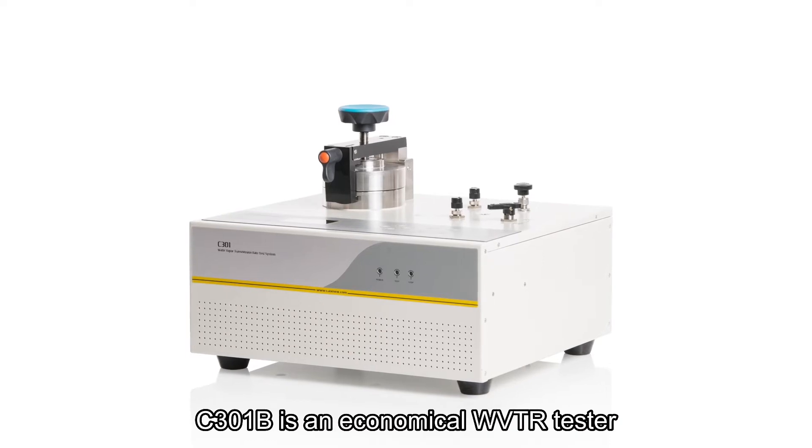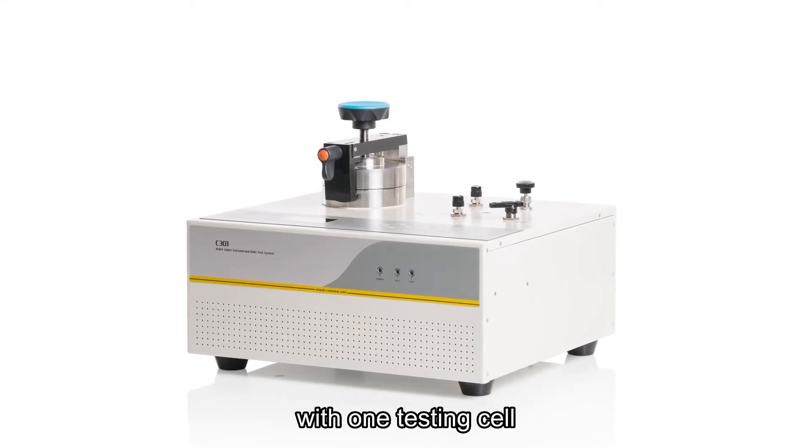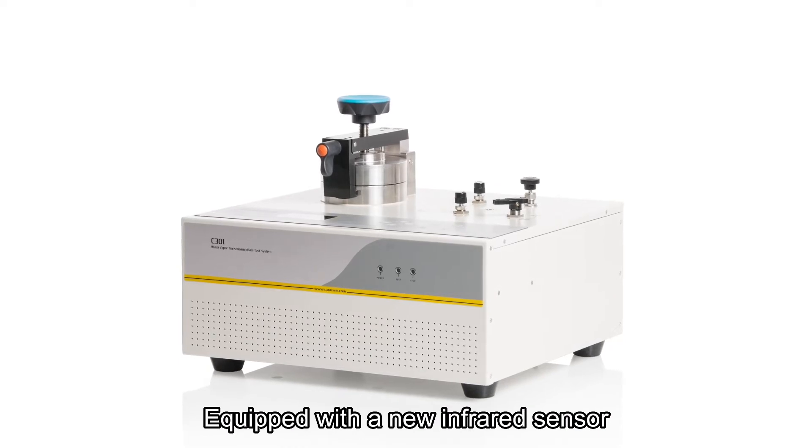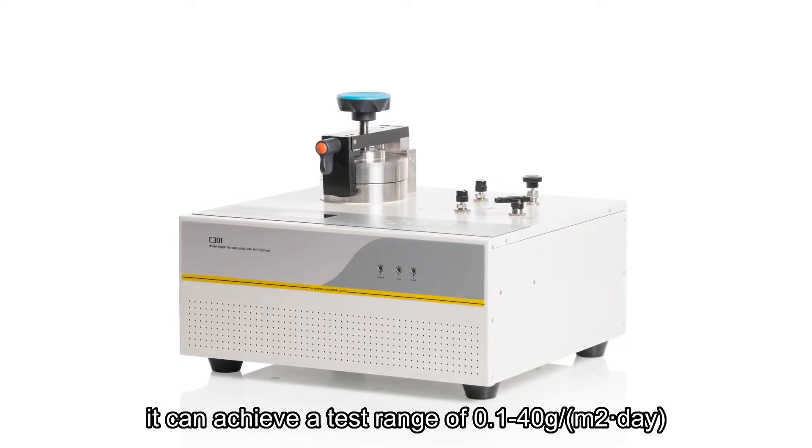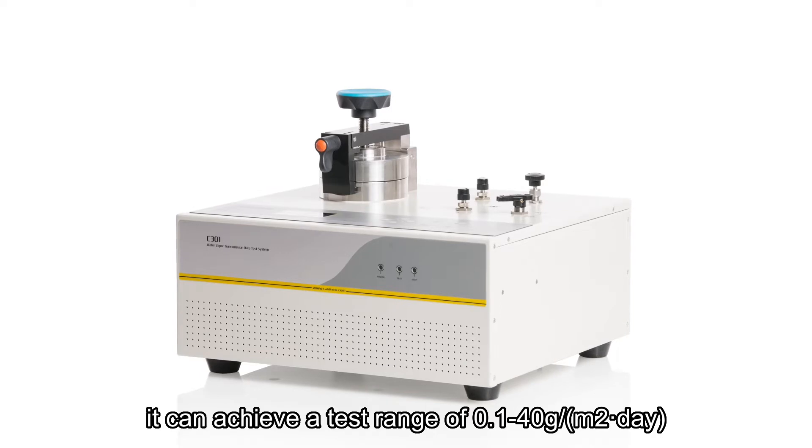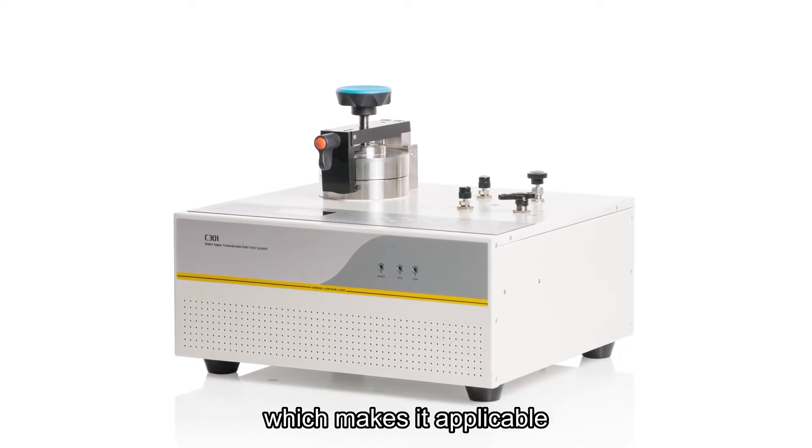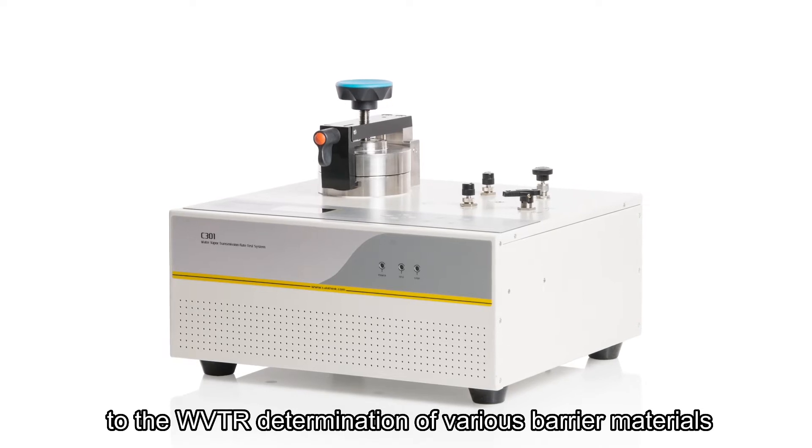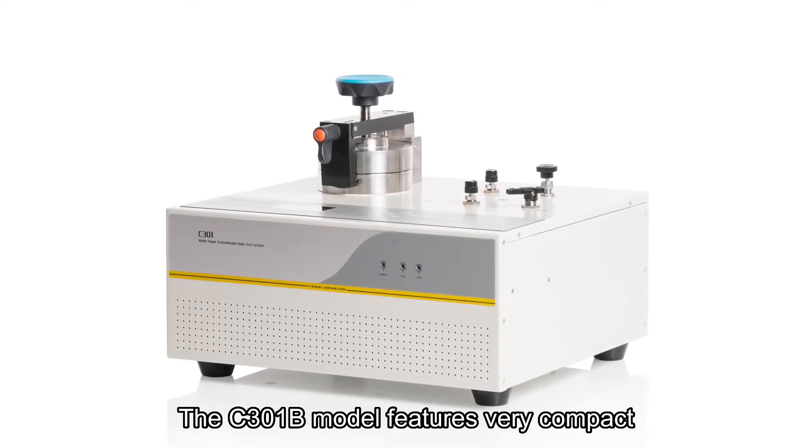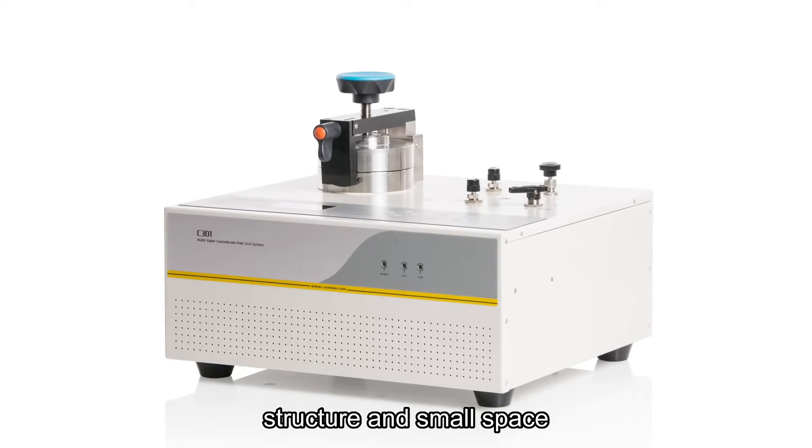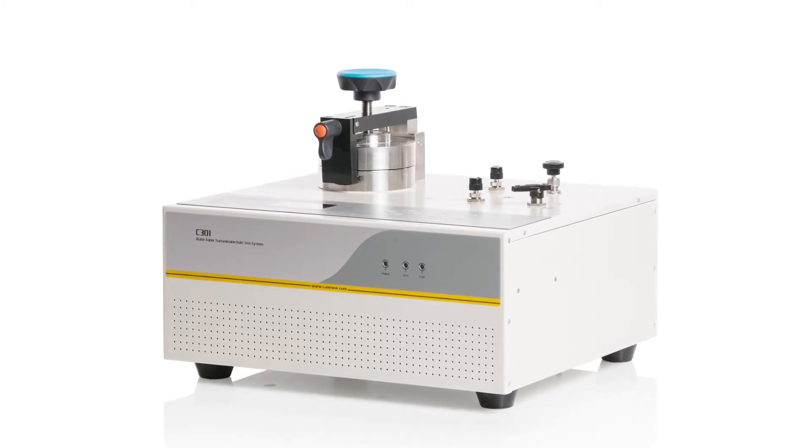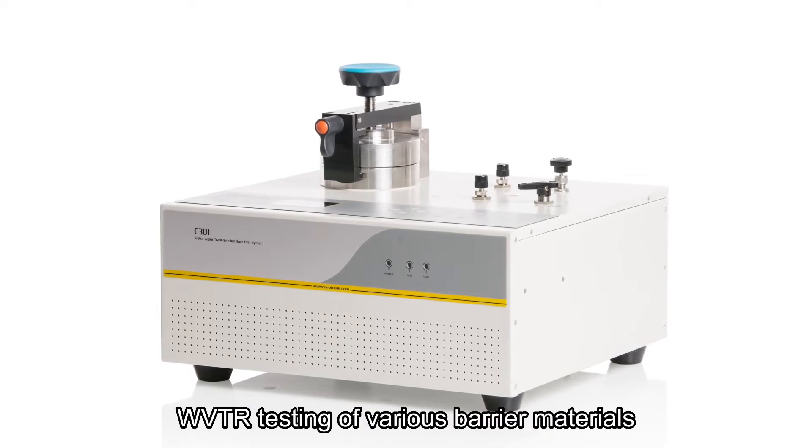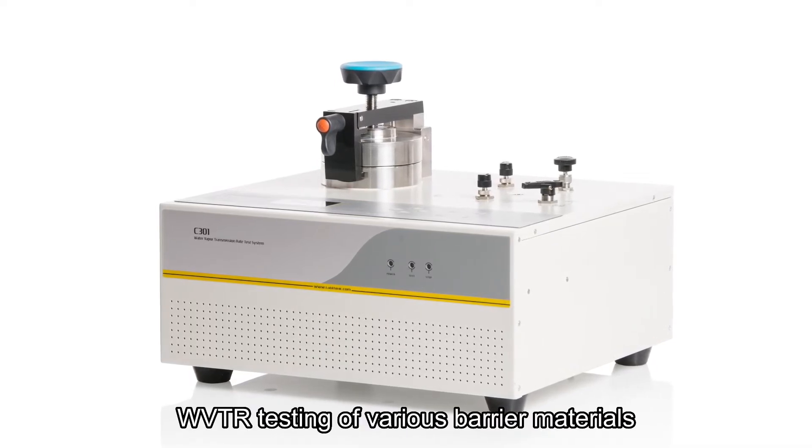C301B is an economical WVTR tester with one testing cell. Equipped with a new infrared sensor, it can achieve a test range of 0.1 to 40 grams per square meter per day, which makes it applicable to the WVTR determination of various barrier materials. The C301B model features very compact structure and small footprint. The model is also very economical for its powerful functions.